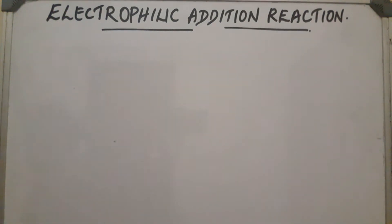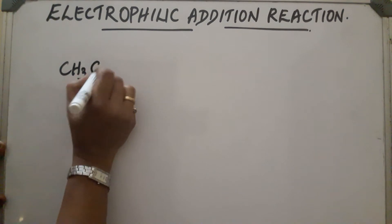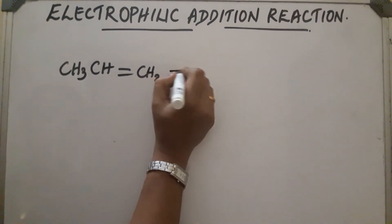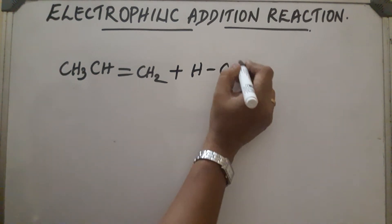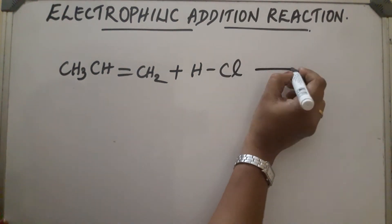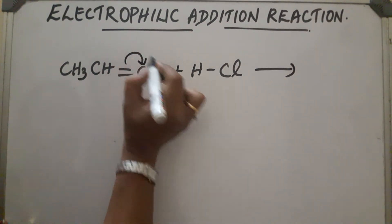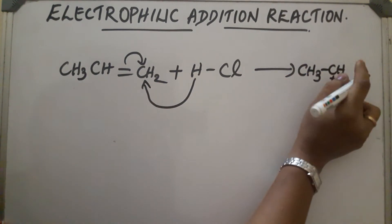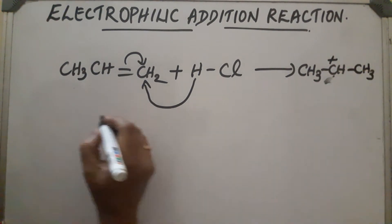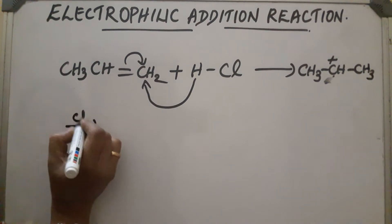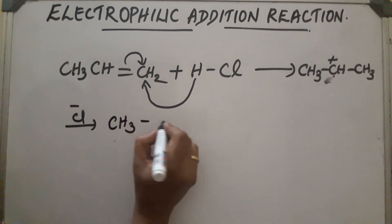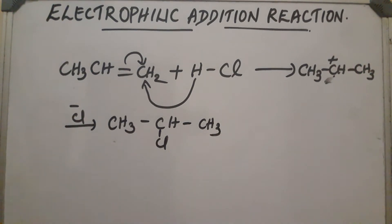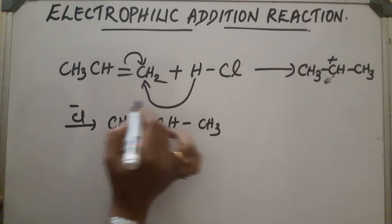In the case of unsymmetrical alkenes like CH3-CH=CH2, when HBr or HCl comes and attacks the bond, H+ will come and attack. Two types of carbocations can be formed: CH3-CH+-CH3 or CH3-CH2-CH2+.